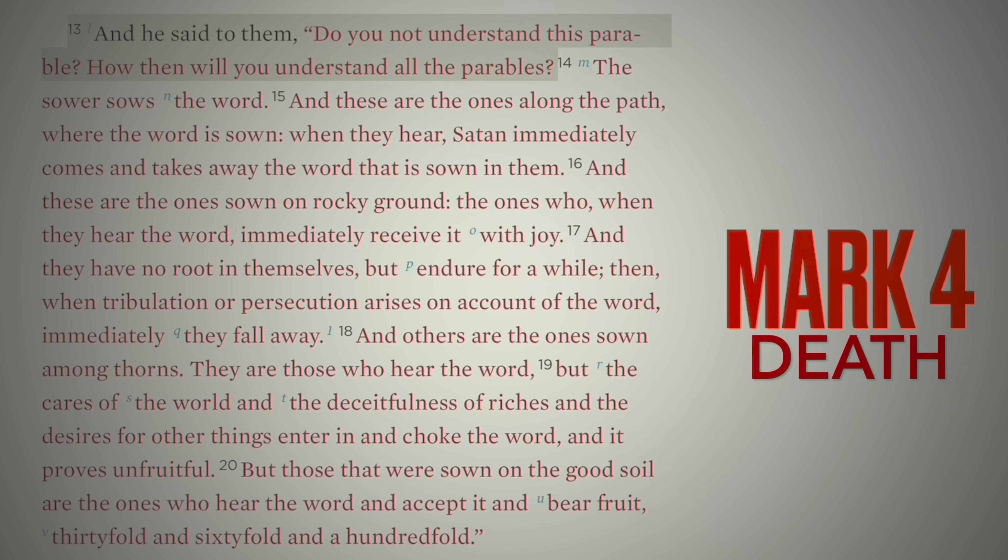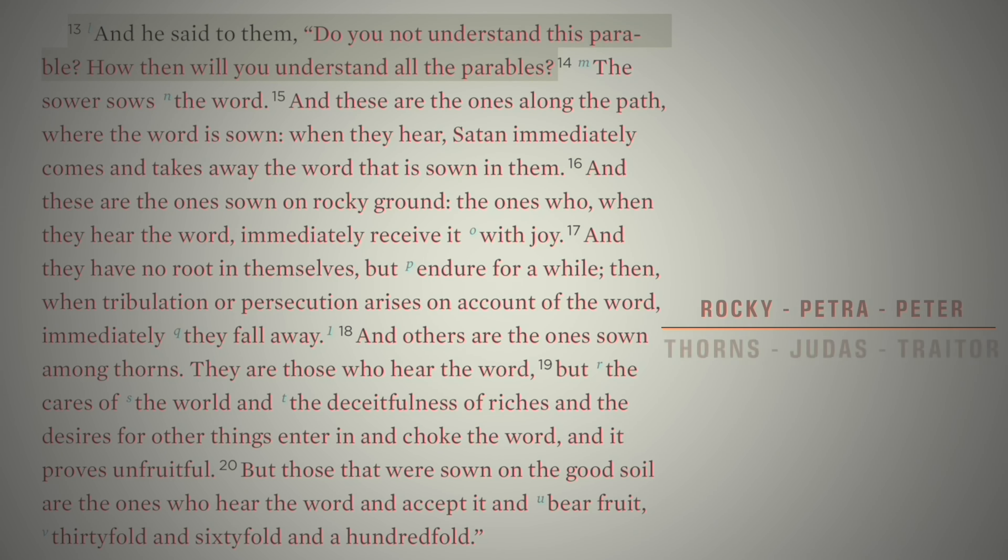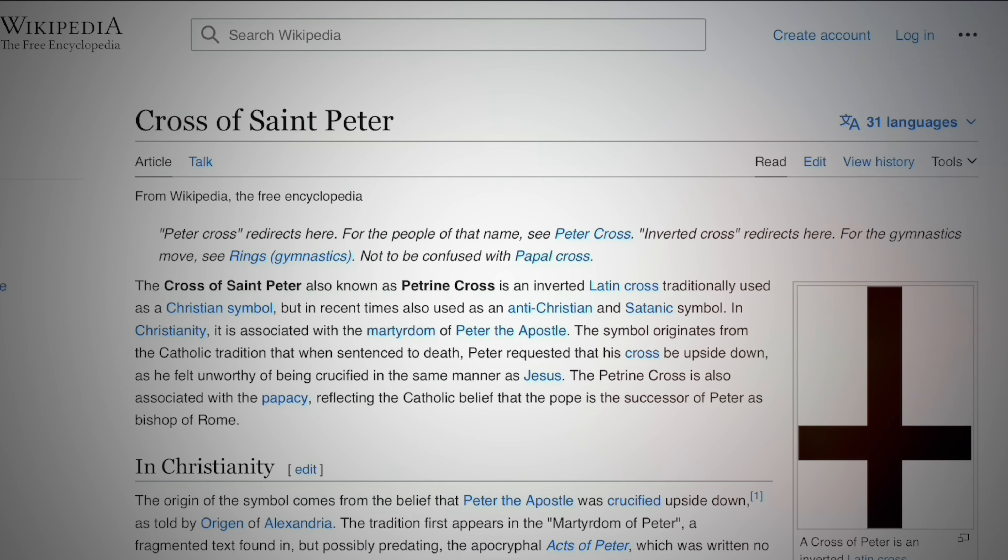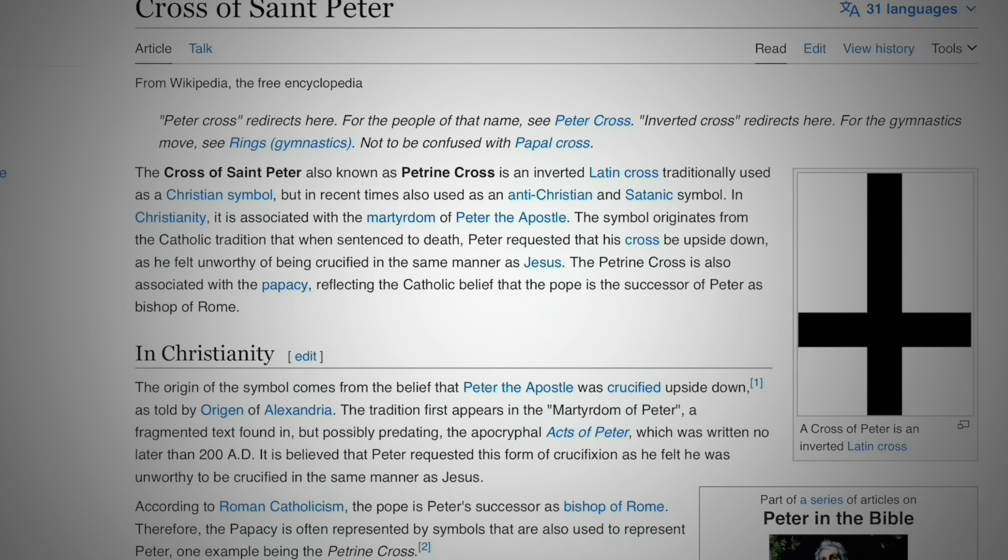There's some seed sown on rocky ground. That's a reference to the rock or Cephas, Peter, the cornerstone of the Catholic Church, which is a pagan institution that worships the Antichrist. And then we have another teaching that when trial, tribulation, and persecution arise on account of the word, they fall away. There's some seed sown amongst thorns. That's the crown of thorns that Judas wanted. Because of the deceitfulness of riches, those thorns come in and they choke. So that's Judas choking himself with the noose, hanging himself. And he wanted that crown of thorns.